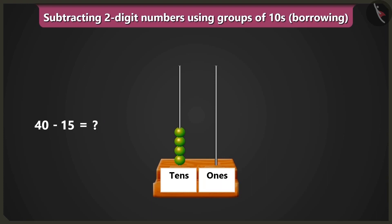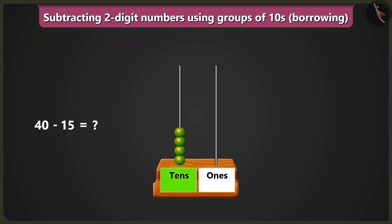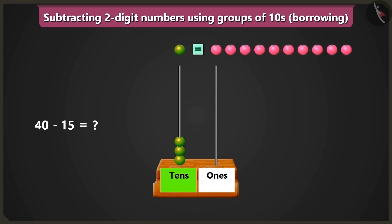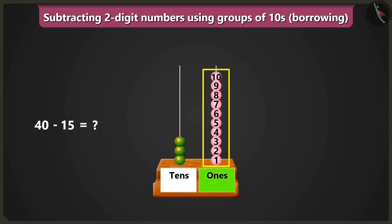We know that 1 ten means 10 ones, so we borrow 1 ten from 4 tens in the box of tens. We remove 1 bead from the box of tens and put 10 beads in the box of ones. Now to subtract 15 from 40, from the box of ones we remove 1, 2, 3, 4 and 5 beads.